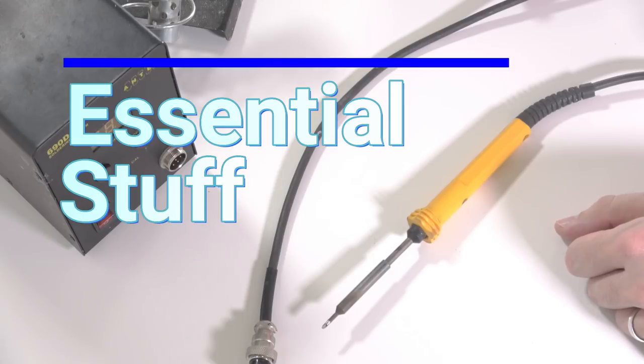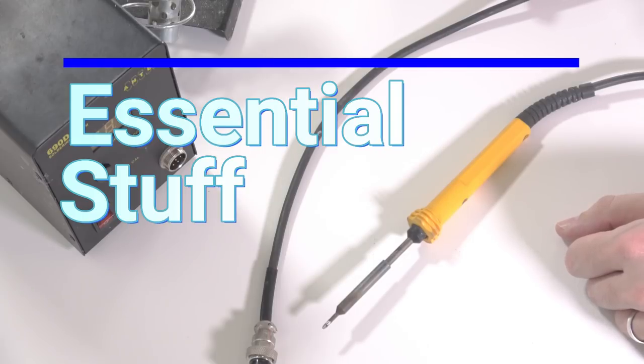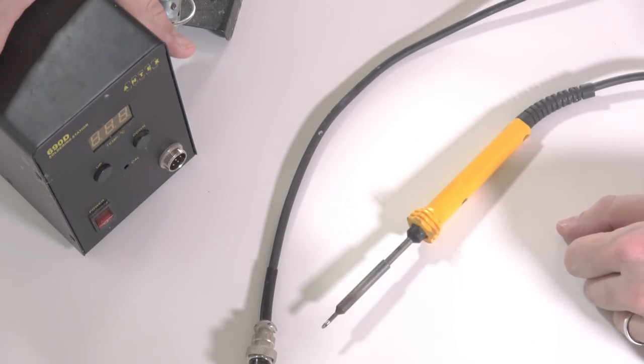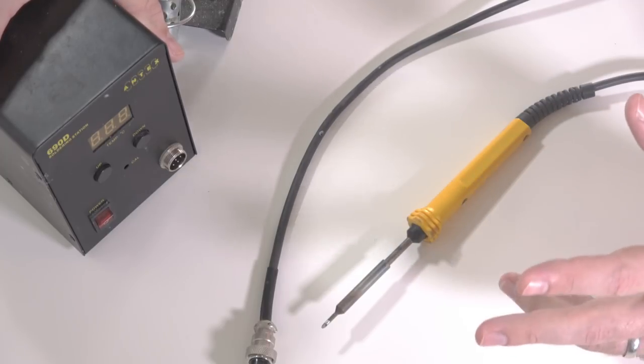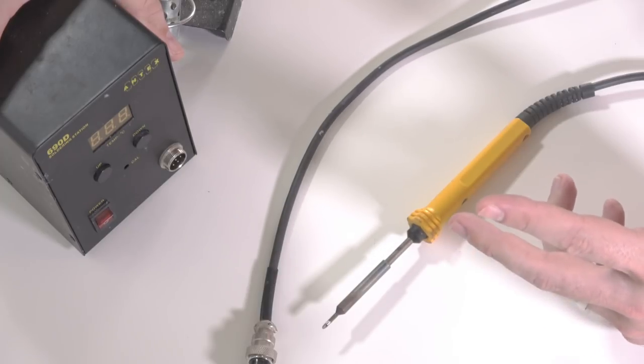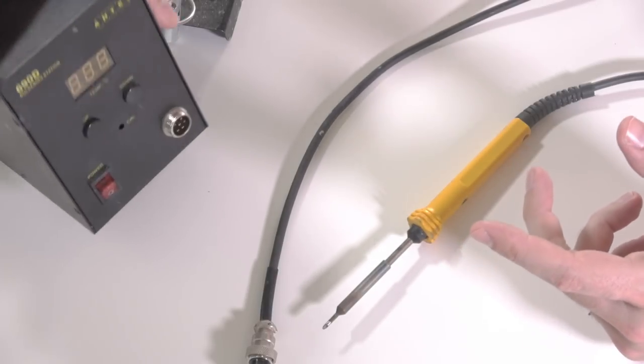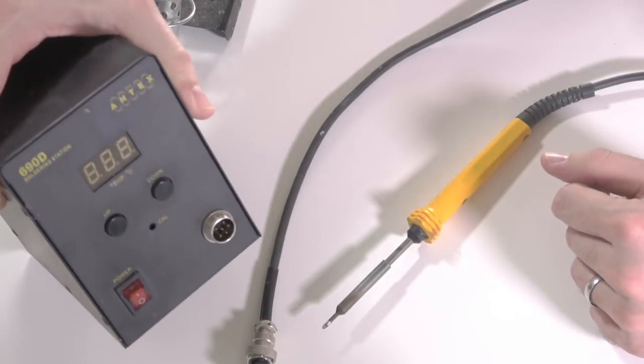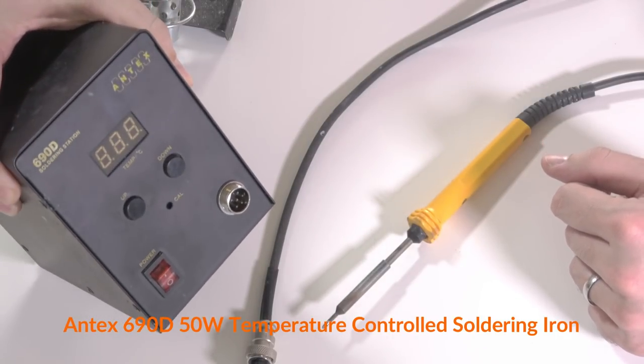Let's start with the most essential stuff then. First of all, you definitely need a soldering iron. A temperature controlled one is a good idea, and I would certainly recommend that if you're working in OO or P4 or EM that you get an iron of about 50 watts. This is the one that I use, it is the Antex 690D.